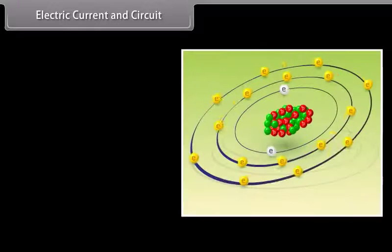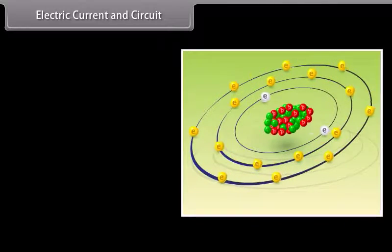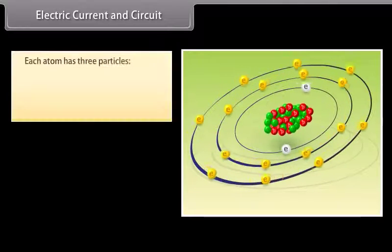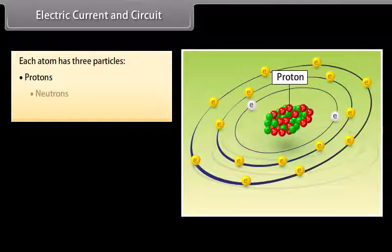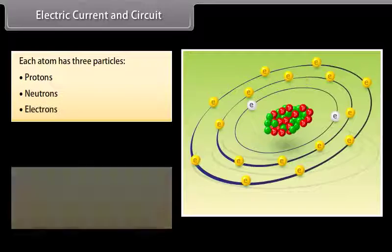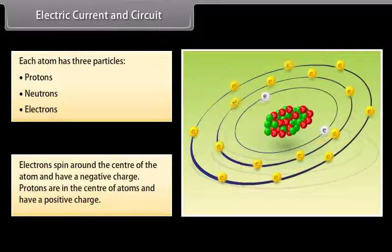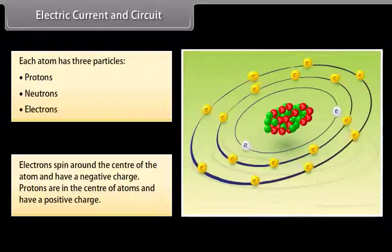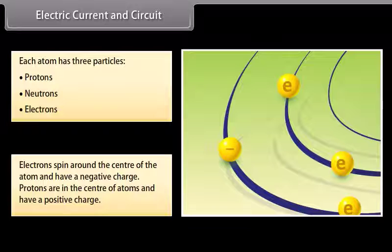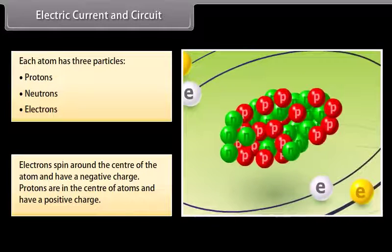All things around us are made up of atoms. Each atom has three particles: protons, neutrons, and electrons. Electrons spin around the center of the atom and have a negative charge. Protons are in the center of atoms and have a positive charge.